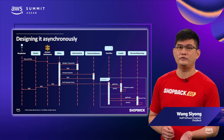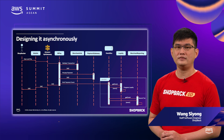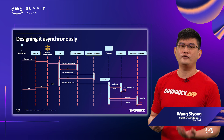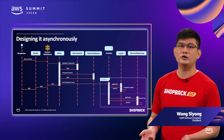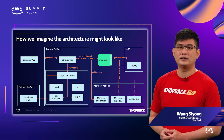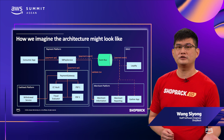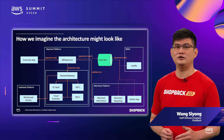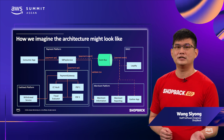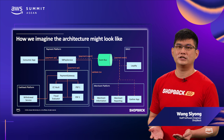Looking at the sequence diagram designed asynchronously, we still need to validate the transaction and process the payment. But this time, we do not need to call the loyalty service and merchant reporting service before returning the response to the user. ShopBack Pay service will instead emit a payment event after it finishes processing, and both the loyalty service and merchant reporting service will process the event afterward without affecting the user's experience. Any other services that need to be notified subscribe to the event bus and make changes within their own system.